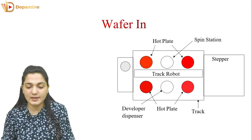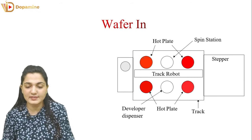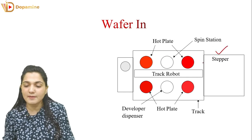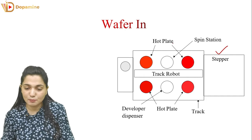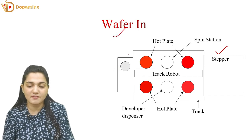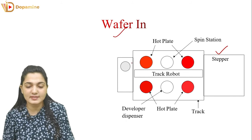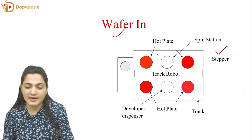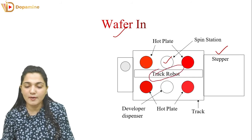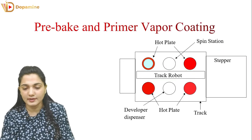You can see the movement of the wafer inside the different locations. In the stepper, we have alignment and exposure. Before that, there are various stations in this Trek stepper integrated system. First, the wafer moves in, and we have various plates — the red plates are the hot plates and the white plate is the developer solution. Inside the Trek, a Trek robot moves the wafer from one point to another.